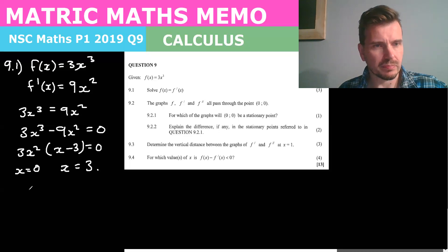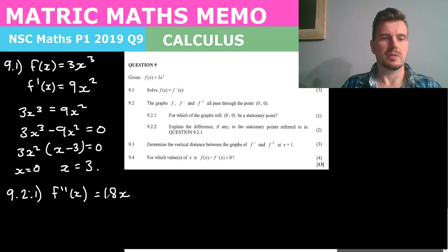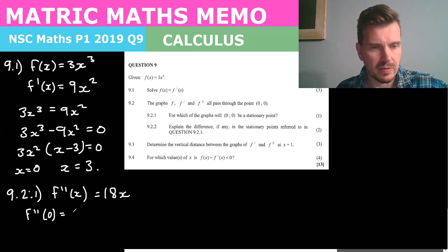So let's do f double dash of x will equal 18x. So what is a stationary point? A stationary point means where the slope is 0. So if we substitute in 0 for f of x we get 0.